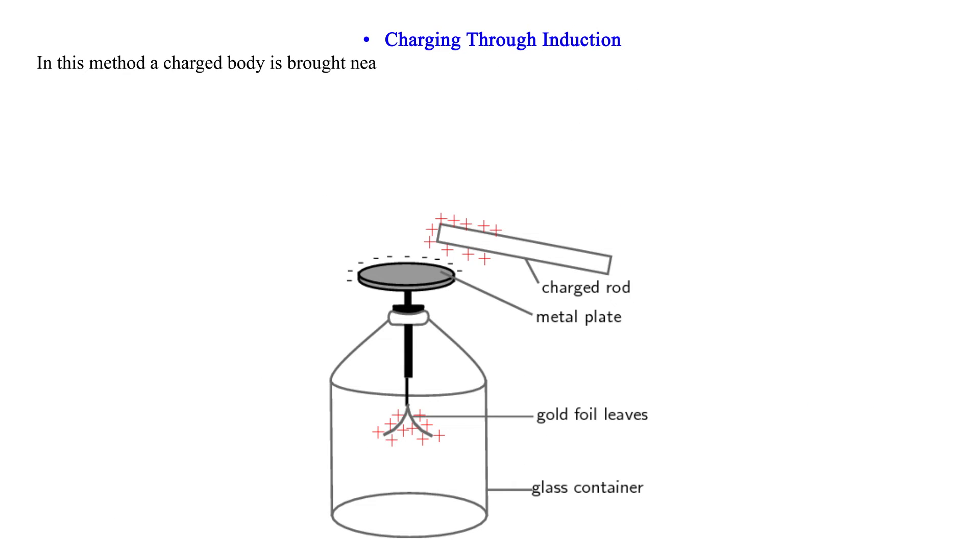Charging through induction. In this method, a charged body is brought near to the cap of the electroscope. Because of attraction, the cap is going to have opposite charge while the leaf is going to have the same charge because of repulsion, as shown.